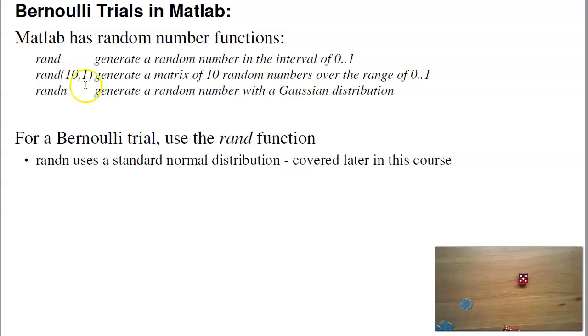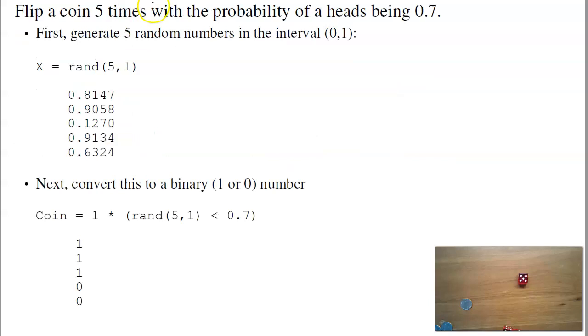For a Bernoulli trial, we use the rand function. That just gives me a number between 0 and 1. For example, if I do rand of 5, 1, I get 5 random numbers between 0 and 1. Every time you type that, you're going to get a different answer. To convert that to binary, suppose I want to flip a coin with a probability of success being 0.7. I can do rand of 5, 1 less than 0.7 times 1. That's going to give me true or 1 any time this is less than 0.7, 70% of the time, and 0 otherwise. So here I've flipped 5 coins, probability of heads is 0.7, and I've got 3 heads and 2 tails.